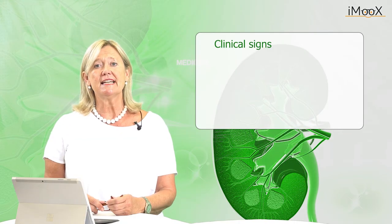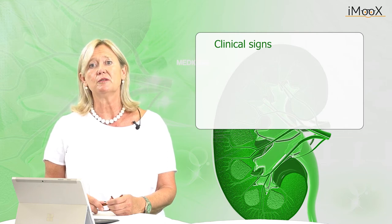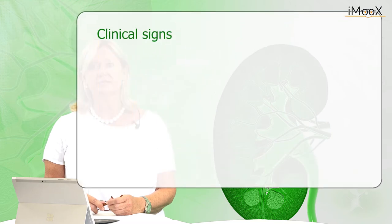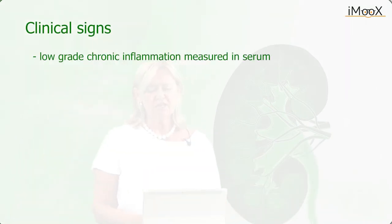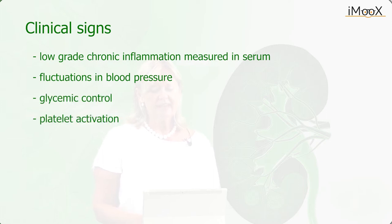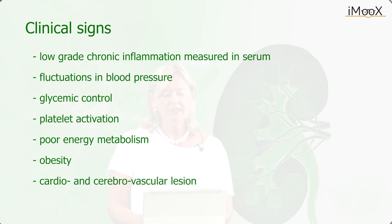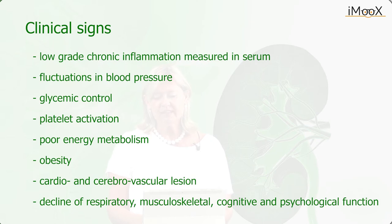The following clinical signs and changes in functional capacity need closer consideration when dealing with older people in daily clinical practice: low-grade chronic inflammation as measured in serum, fluctuation in blood pressure, glycemic control, platelet activation, poor energy metabolism, obesity, cardio and cerebrovascular lesions, decline of respiratory, musculoskeletal, cognitive and psychological function.